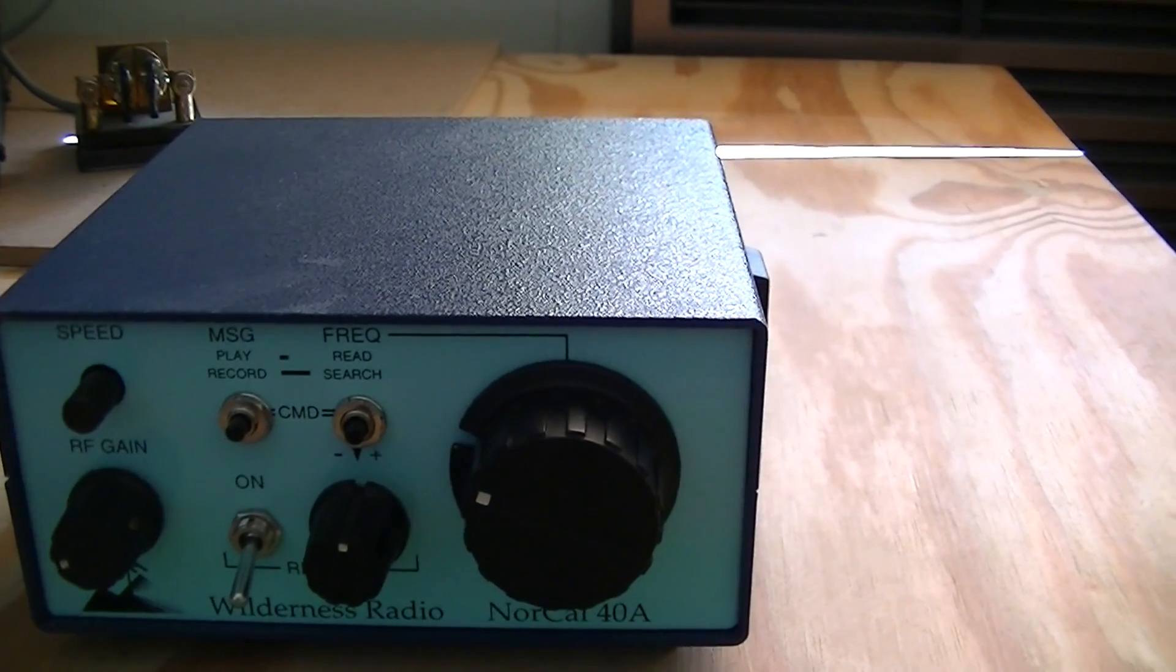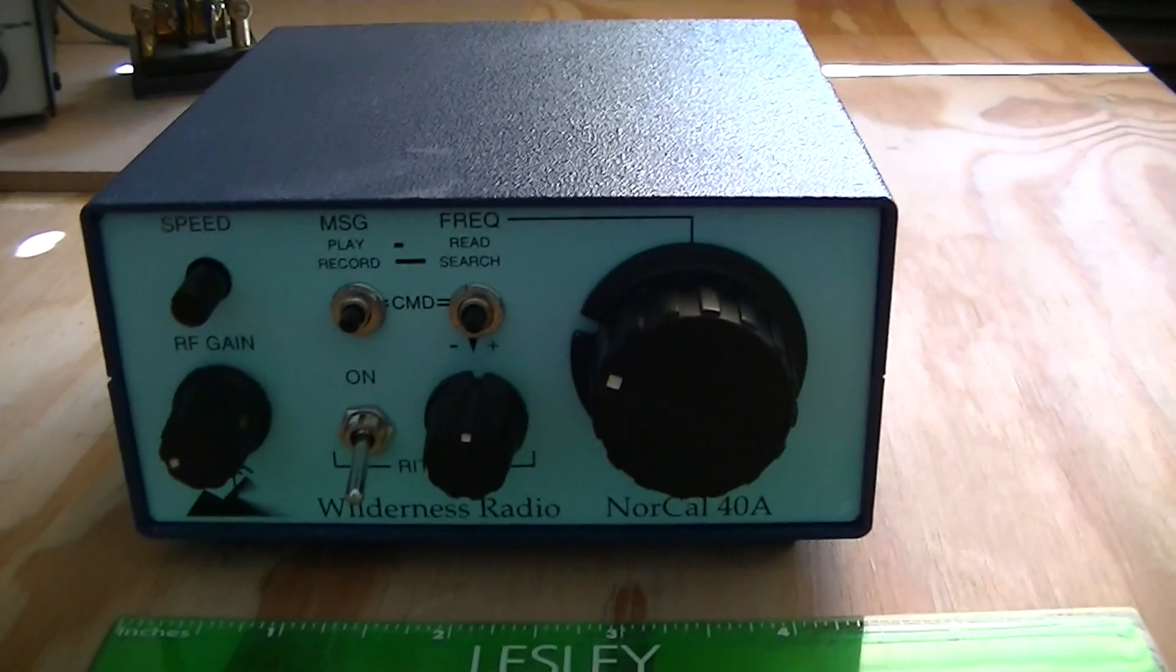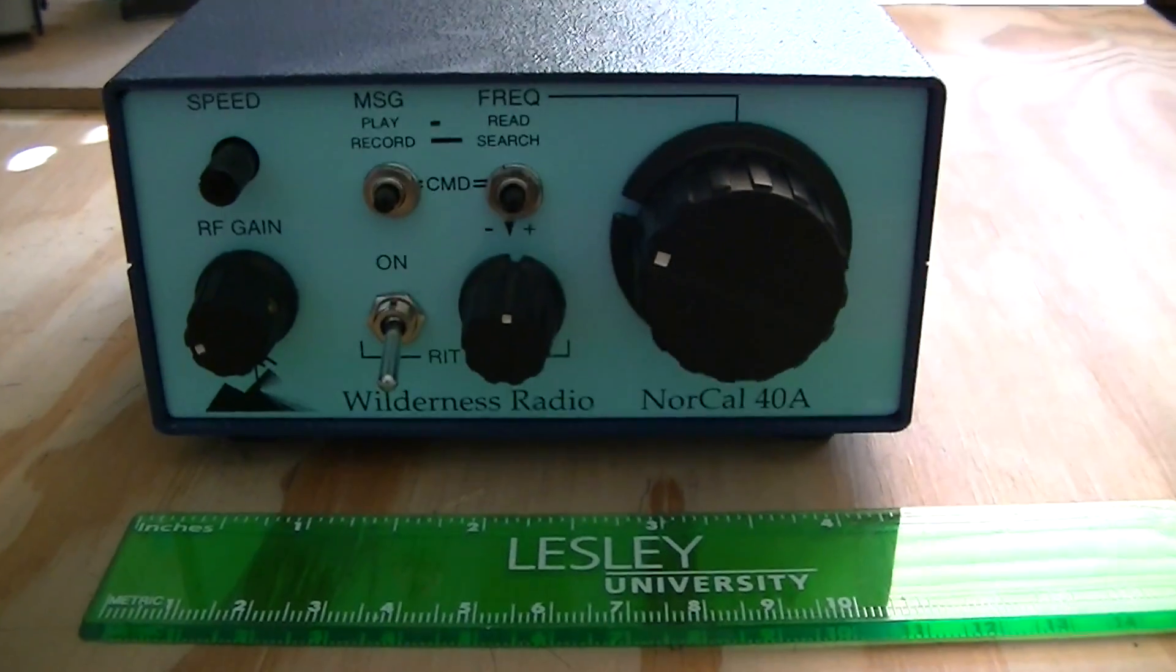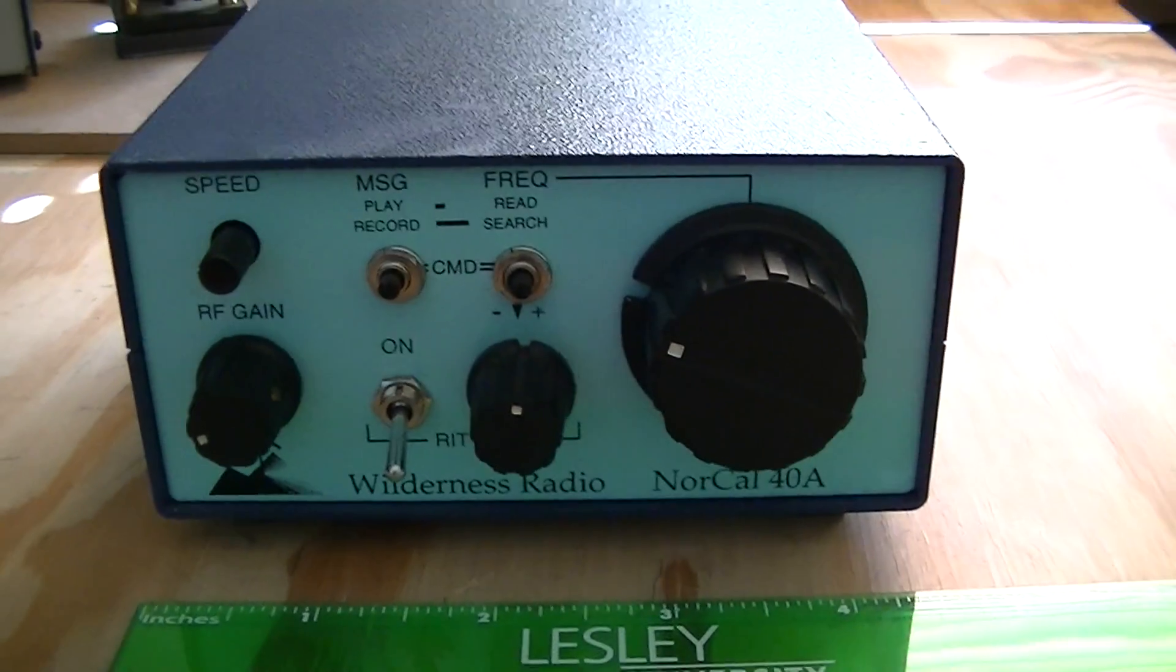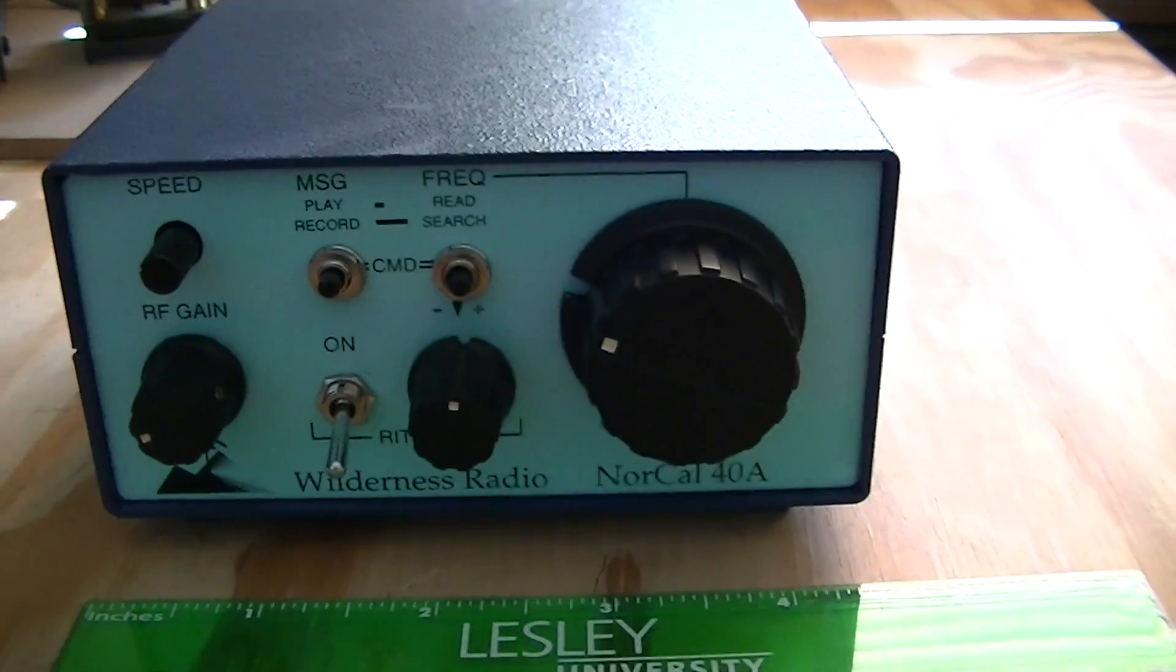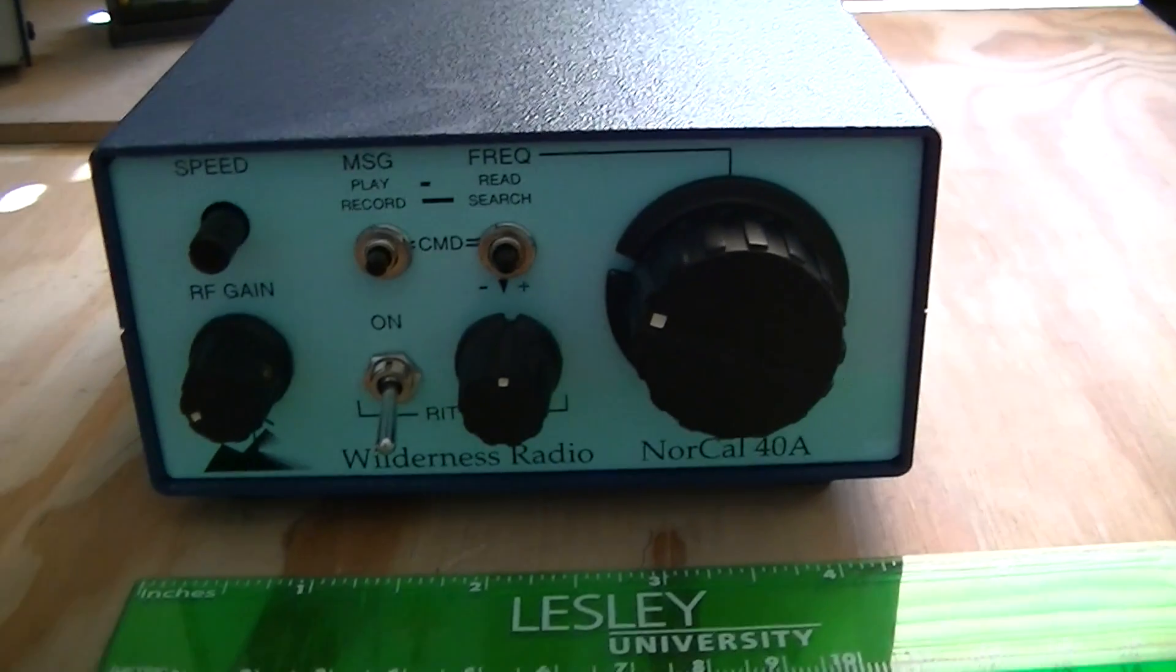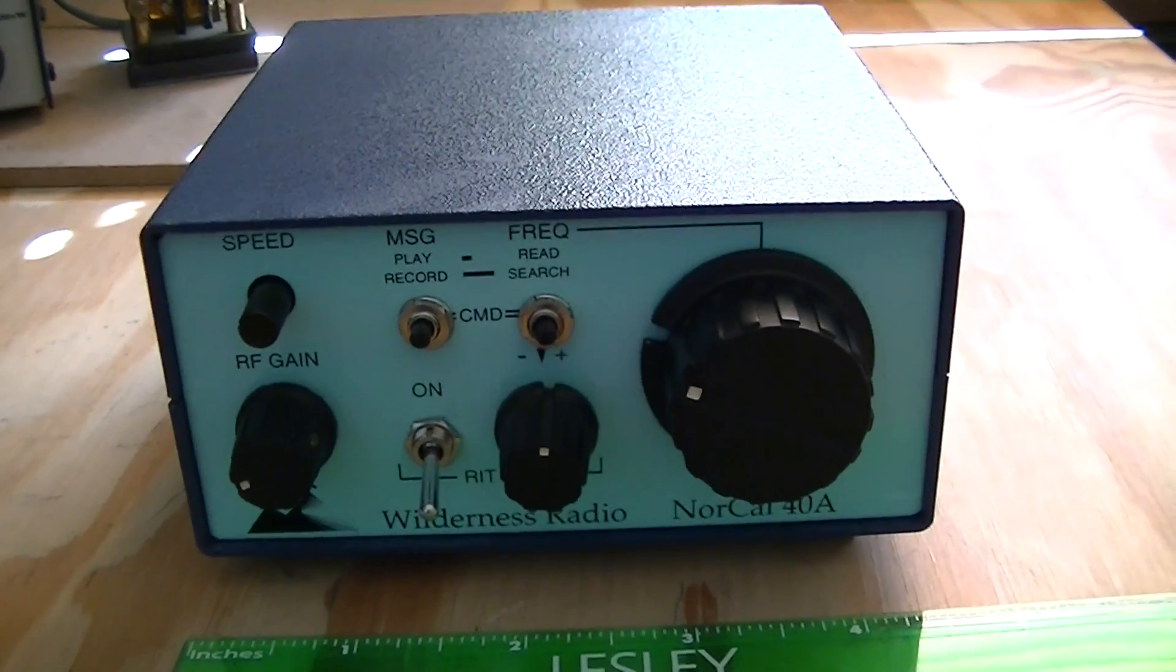This one has the KC-1 keyer built-in. As you can see, it's about 4 inches wide, about the same deep, and about 2 inches high. So a perfect backpack radio.